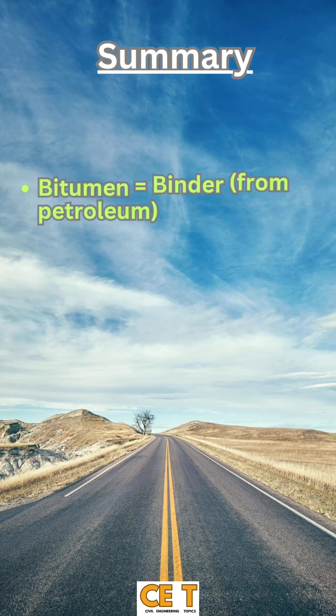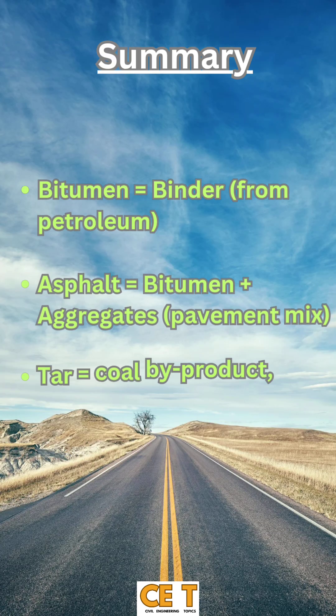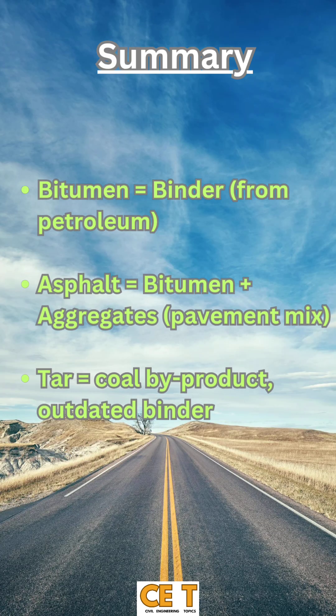Summary: bitumen equals binder obtained from petroleum. Asphalt equals bitumen plus aggregates, used in pavement mix. Tar equals coal by-product and outdated binder.